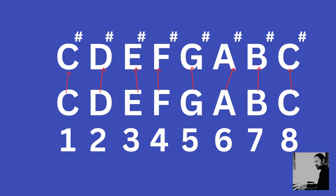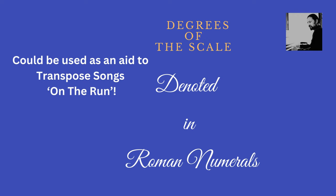Building the C-sharp major scale is very straightforward. First, think of the C major scale — C, D, E, F, G, A, B, C. Now sharpen each note: C becomes C-sharp, D becomes D-sharp, E becomes E-sharp, F becomes F-sharp, G becomes G-sharp, A becomes A-sharp, and B becomes B-sharp.